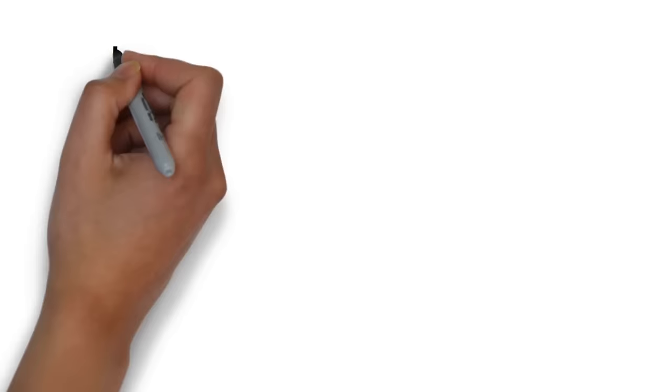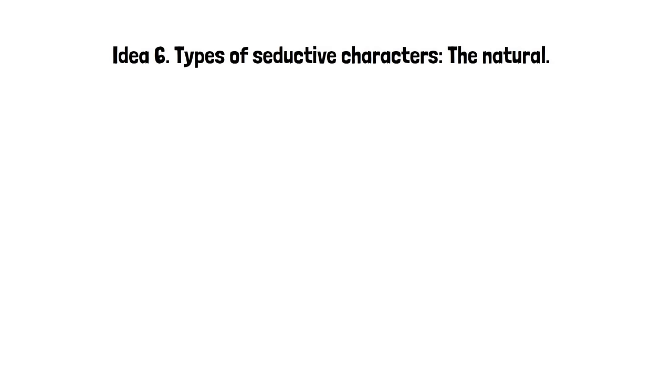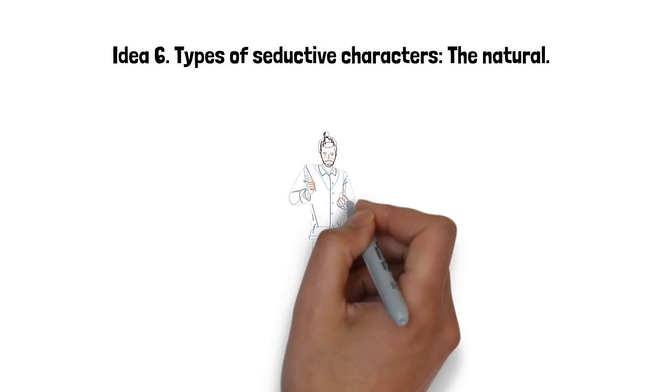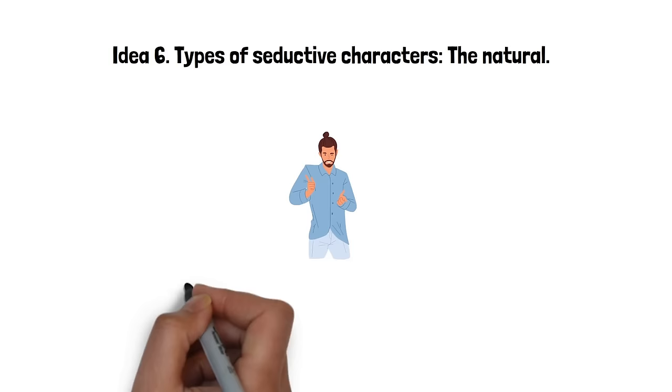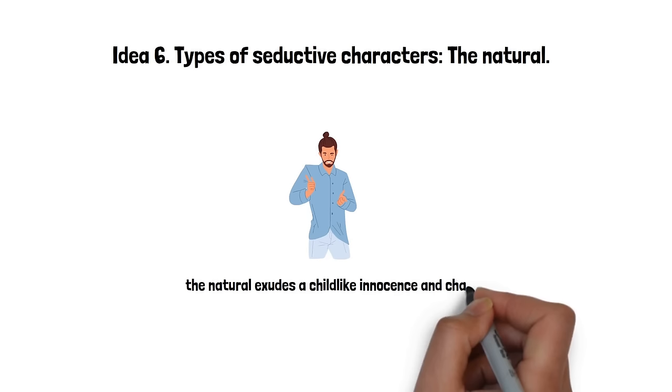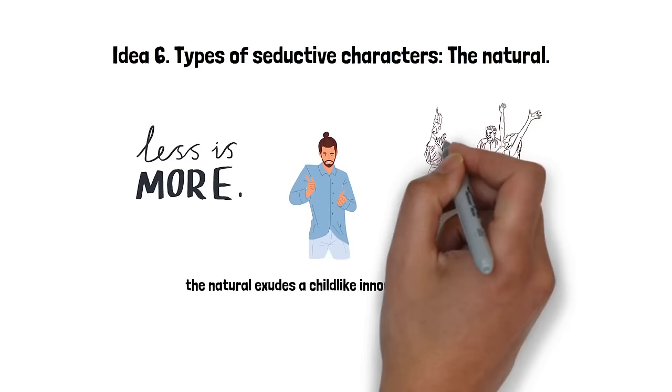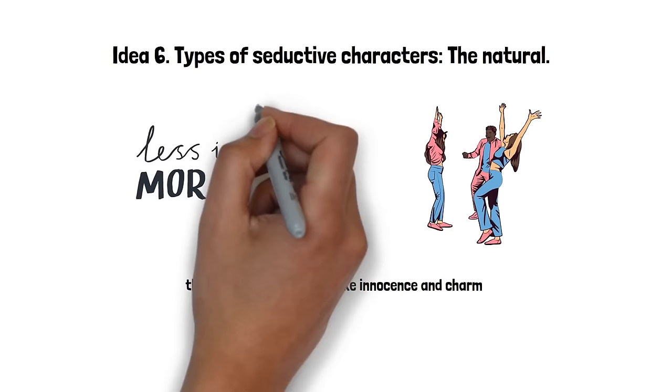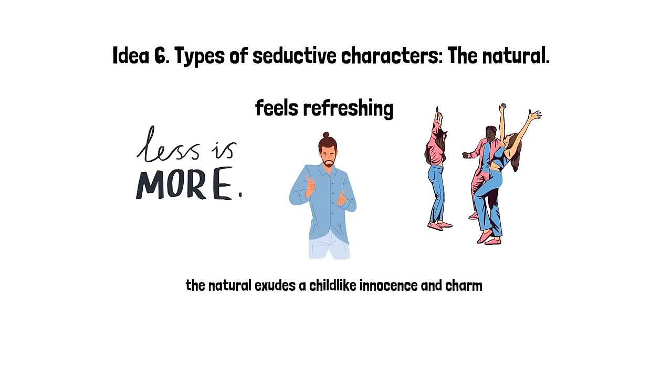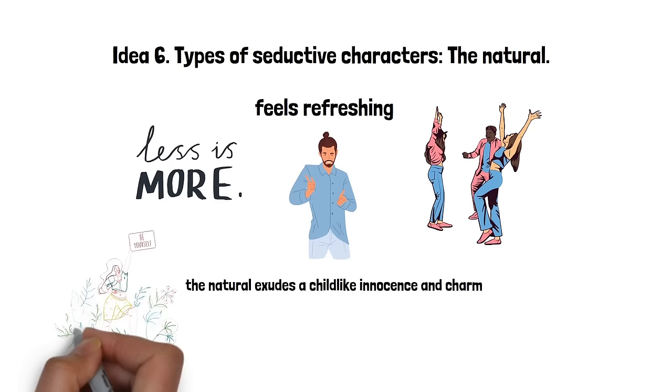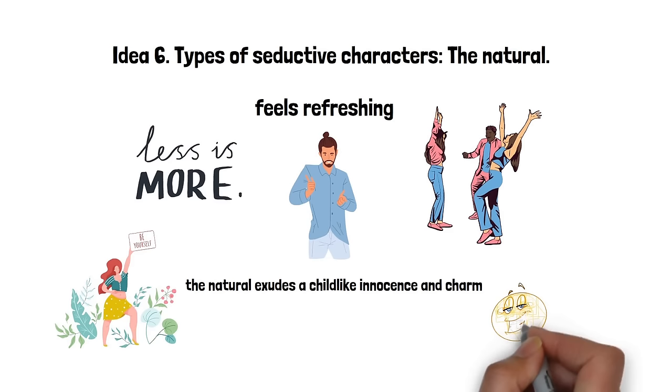Idea 6. Types of seductive characters. The natural. The natural is a seducer who embodies a sense of spontaneity, authenticity, and ease. Unlike the more calculated and deliberate seducers, the natural exudes a childlike innocence and charm. This character appeals to the part of us that yearns for a simpler, less complicated world. Their open and genuine nature draws others in, as does their playful and spontaneous spirit. Being around a natural feels refreshing, like a return to a less guarded, more straightforward way of being. They captivate by simply being themselves, not putting on airs or trying to impress. This effortless charm and lack of artifice is where the natural's seductive power lies.